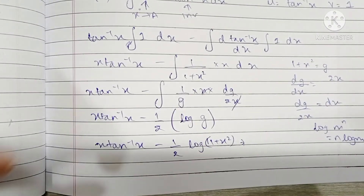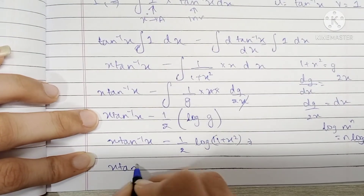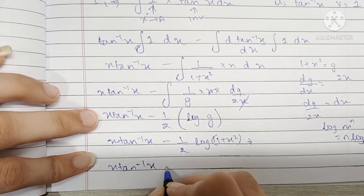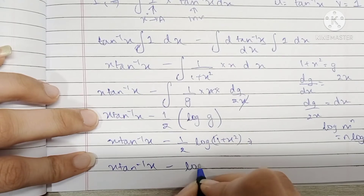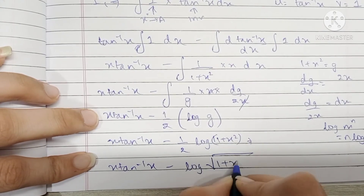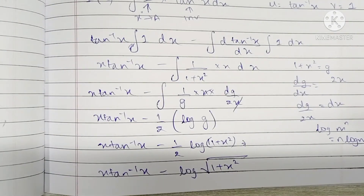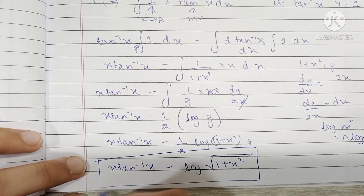The final result for I₁ becomes x · tan⁻¹(x) − log(√(1 + x²)), because anything raised to the power of 1/2 is the square root. This is I₁.